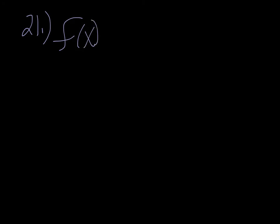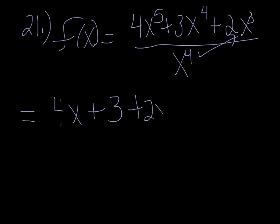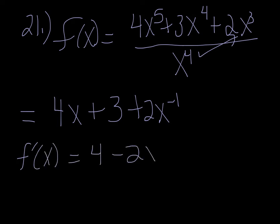Number 21: you're given a function and want its derivative. You could use the quotient rule, but you can also make your life easier — divide everybody by x to the 4th. That gives you 4x plus 3, and x cubed divided by x to the 4th gives you x to the negative 1, which you can bring up to the top as 2x to the negative 1 — that's how we make it derivative-friendly. Now take the derivative: you get 4 minus 2x to the negative 2. Written without negative exponents, that's 4 minus 2 over x squared.